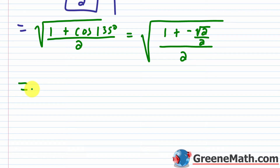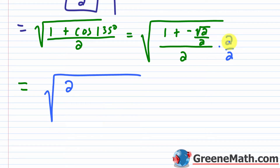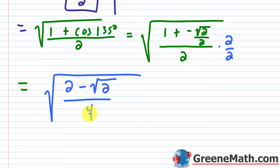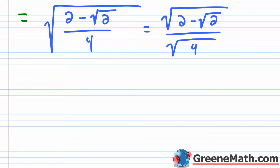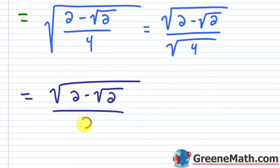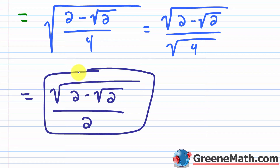To simplify, I'll multiply by 2 over 2. So 2 times 1 is 2, and 2 times negative square root of 2 over 2 — the 2's cancel — gives us minus square root of 2. This is over 4. We can write this as the square root of 2 minus the square root of 2, over the square root of 4. Since the square root of 4 is 2, the final answer is the square root of 2 minus the square root of 2, all over 2. That's the exact value of cosine of 67.5 degrees.